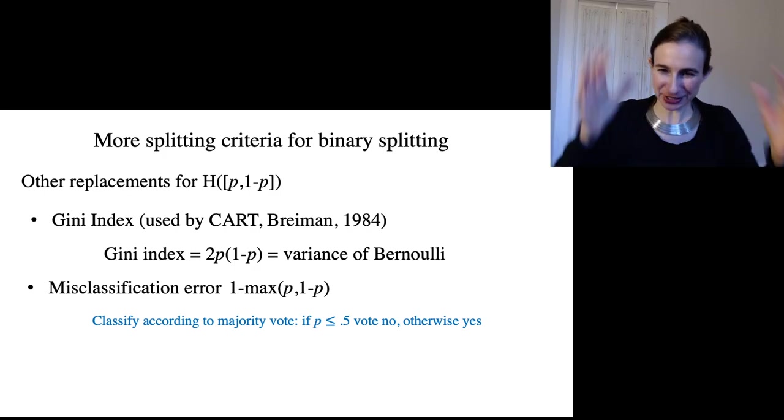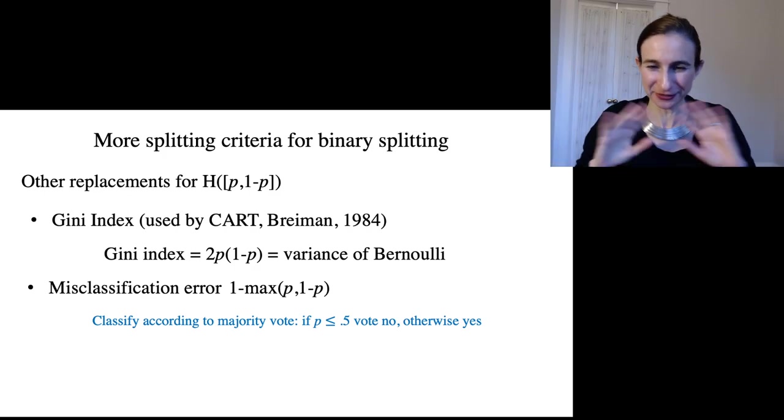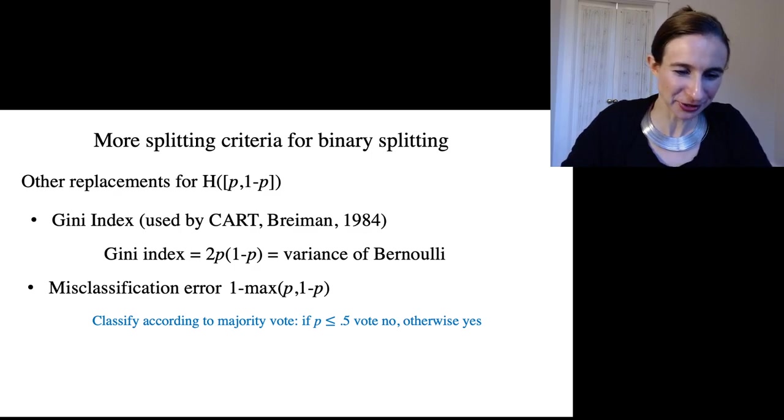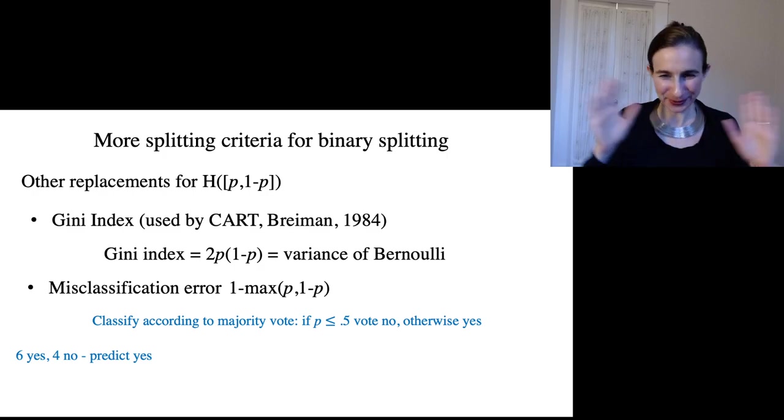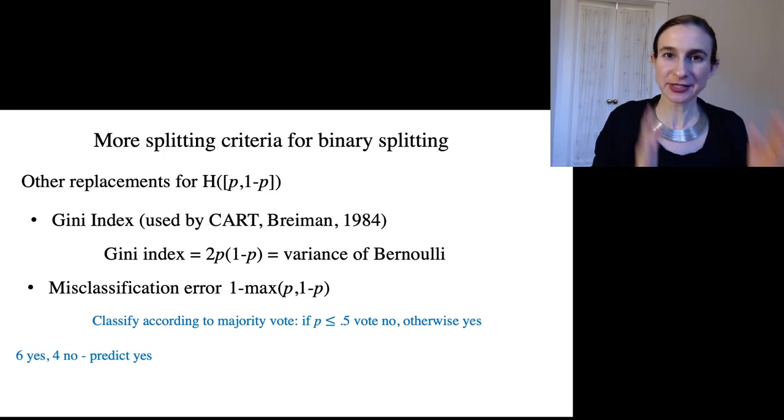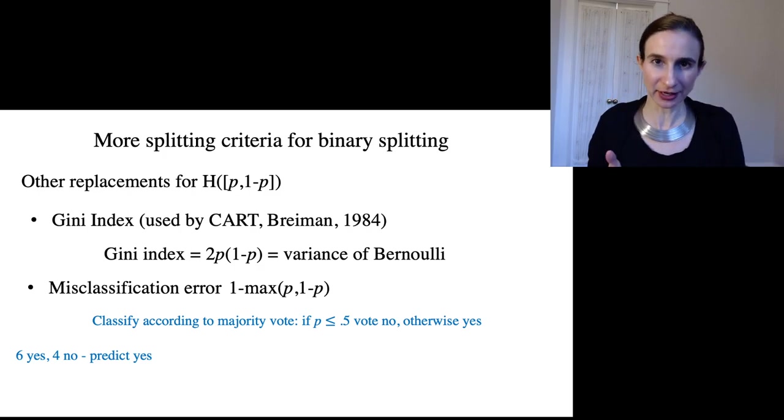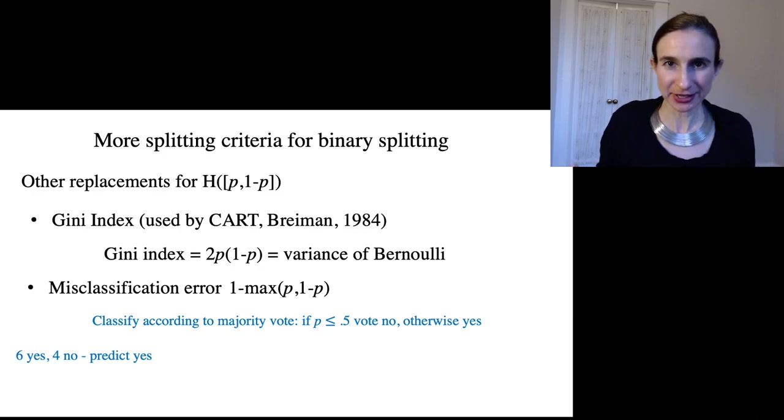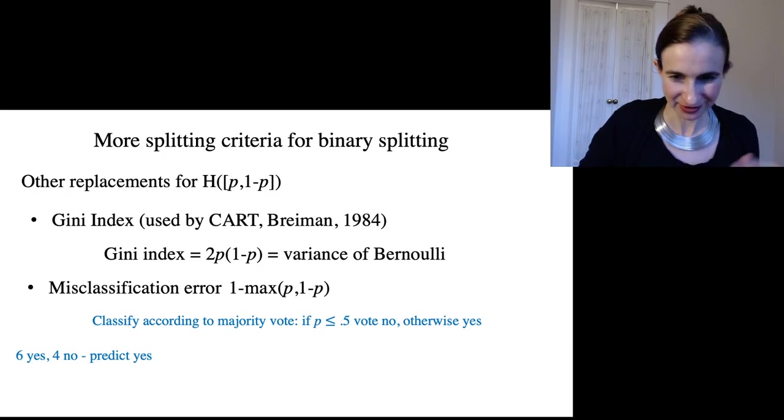Let's take a look at the accuracy of this classification rule. Let's say we have six positives and four negatives. What do we predict? We predict positive, because there's six of them. There's more positives than negatives.